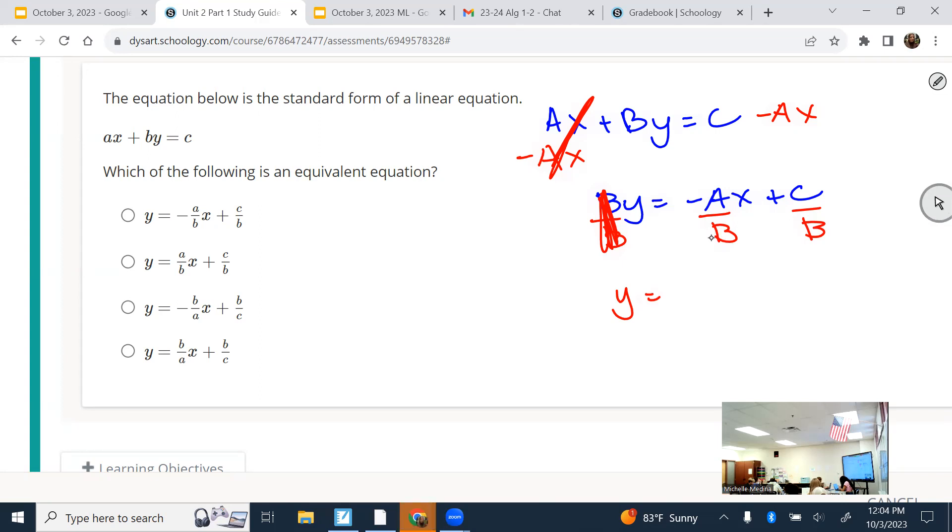Which answer option best matches what's over here? On my screen, it's A. It's probably shuffled on yours. But yeah, it has the X term as negative A over B. And the Y intercept, because we basically turned it to slope intercept form, is the positive C over B. Questions, comments, concerns? All right. So then if you have more questions, make sure you email me. The test is tomorrow. You should be shooting for an 80% or higher on both. All right. Thank you.